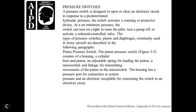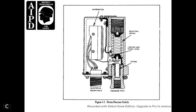Pressure Switch. The pressure switch is designed to open and close an electrical circuit in response to a predetermined hydraulic pressure. The switch activates warning and protective devices when set to minimum pressure. It can turn on a warning light to alert the pilot, turn off the pump, or activate a solenoid-controlled valve. Two types are commonly used in Army aircraft: piston and diaphragm. The piston pressure switch shown in figure 3-3 consists of a housing, cylinder port, piston, and adjusting spring loading the piston, with a micro-switch linked by linkage to transmit the movement of the piston to the micro-switch. The housing has a pressure port connected to the system pressure and an electrical receptacle connecting the switch to an electrical circuit. The diaphragm pressure switch consists of a housing, diaphragm, adjusting spring, and micro-switch linkage transmitting diaphragm movement to the micro-switch.